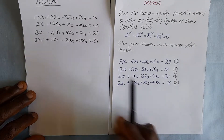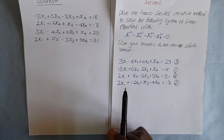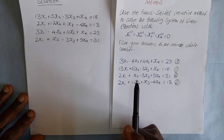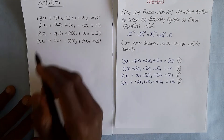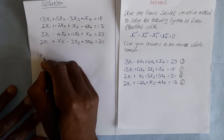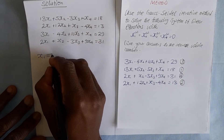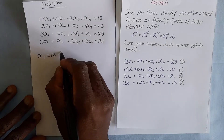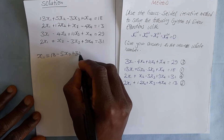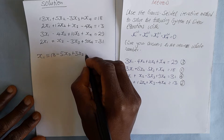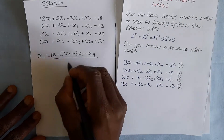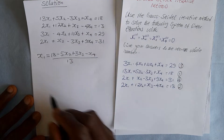We can now rewrite this system making x1, x2, x3, and x4 the subjects of equations 1, 2, 3, and 4 respectively. Taking equation 1 and making x1 the subject: x1 = (18 − 5x2 + 3x3 − x4) / 13.